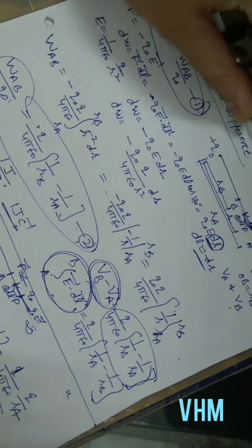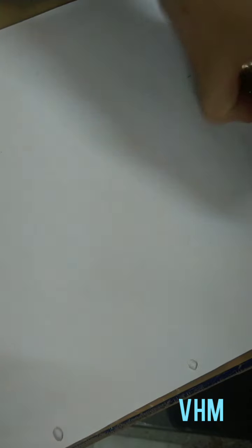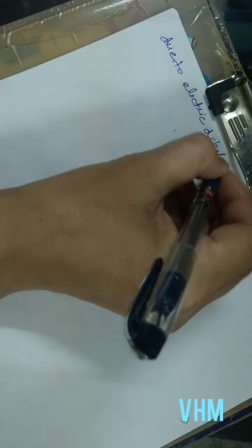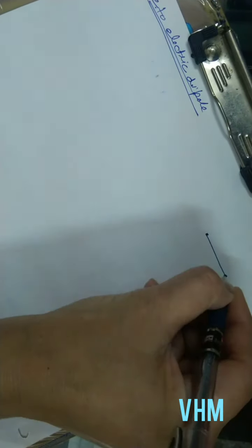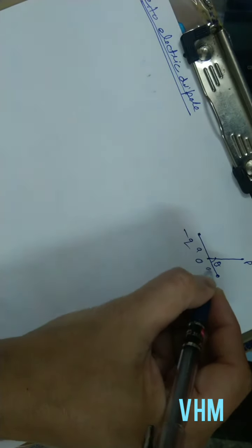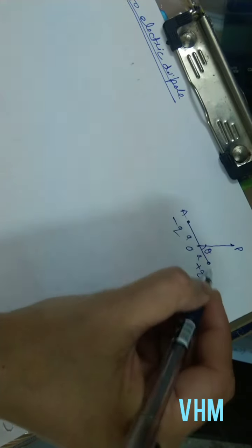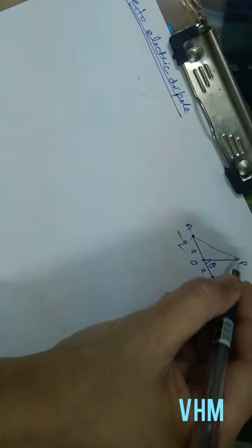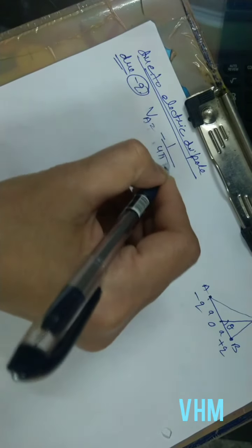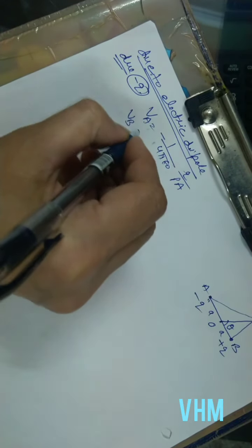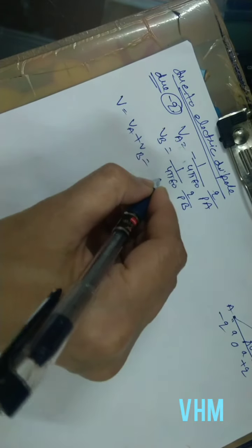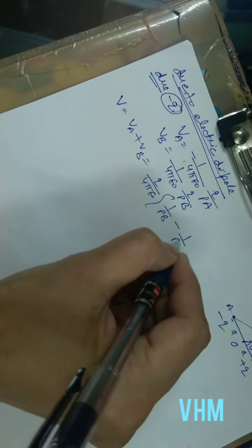Next is the electric potential at any point due to an electric dipole. We have the dipole with minus Q and plus Q with center O. The observation point P is at angle theta and distance R. We need to find points A and B on the dipole axis. Due to minus Q, the potential is minus 1/(4πε₀) · Q/PA. Due to plus Q, the potential is plus 1/(4πε₀) · Q/PB. The total potential is Q/(4πε₀) · (1/PB − 1/PA). This is equation 1.